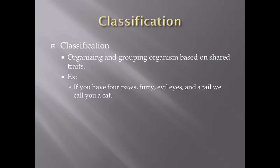Now classification. Classification is organizing and grouping organisms based on shared traits. So for example, if you have four paws, are furry, have evil eyes, and have a tail, we would call you a cat. If you had four limbs, stood up on two of them, and had opposable thumbs, we would call you a human being. All we're saying with classification is we look at the traits that animals have and we begin to classify them. We begin to create a rule set for how we name these animals, and we do that based upon their morphology — based upon how they look.